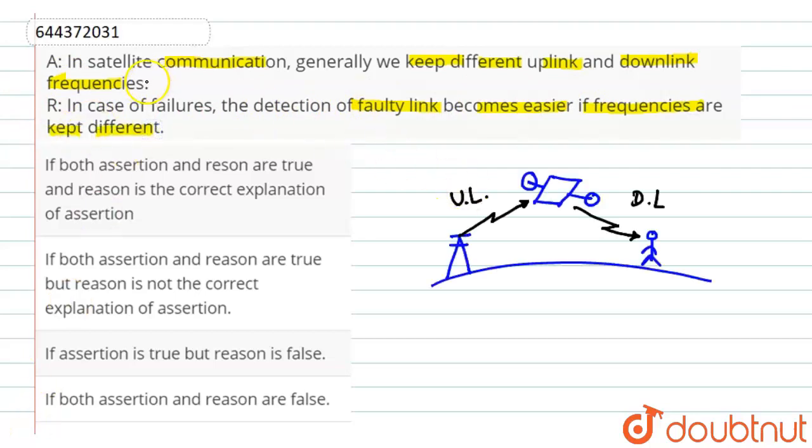We know that in case of satellite communication, generally we keep the uplink and downlink frequencies different. Basically, the uplink frequency refers to the signal which is transmitted from a tower or from the transmitter to the satellite, and downlink refers to the signal which is transmitted from the satellite to the particular user or receiver.